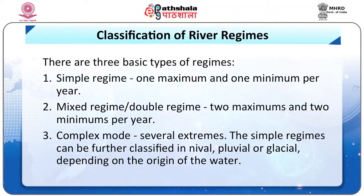There are three basic types of regimes. Number one: simple regime, which has one maximum and one minimum per year. Number two: mixed regime or double regime, which has two maximums and two minimums per year. Number three: complex regime, which has several extremes. Simple regimes can be further classified as nival, pluvial, or glacial, depending on the origin of the water.